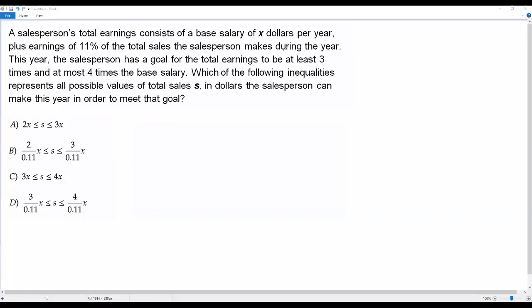Here we have a sad math question. Let's go to the information. A salesperson's total earning consists of a base salary of X dollars per year plus the earnings of 11% of the total sales the salesperson makes during the year.